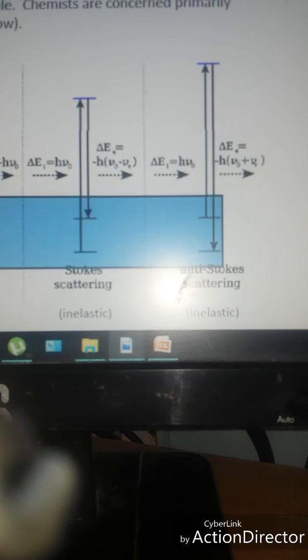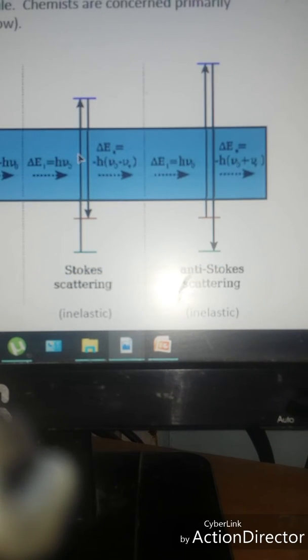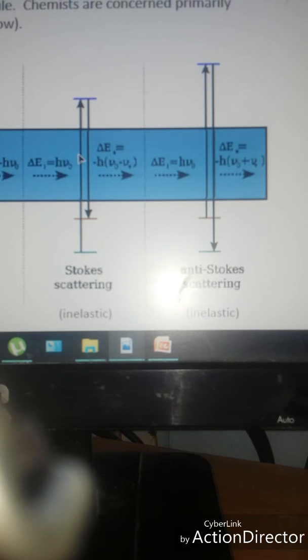Let us come to Stokes scattering first. In Stokes scattering, you can see the energy is lost, so the Raman scattering is designated as Stokes scattering. This is the energy of the incident light, whereas this is the energy of the scattered light. The resulting frequency of the scattering is reduced by ν₀ minus νᵥ. So this Raman frequency is called the Stokes frequency.